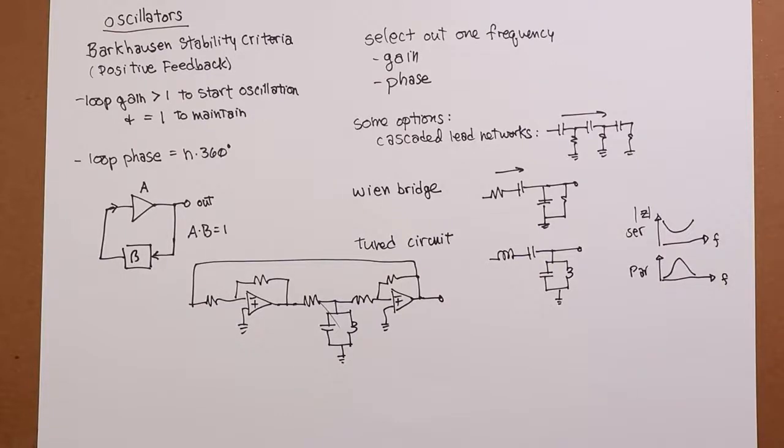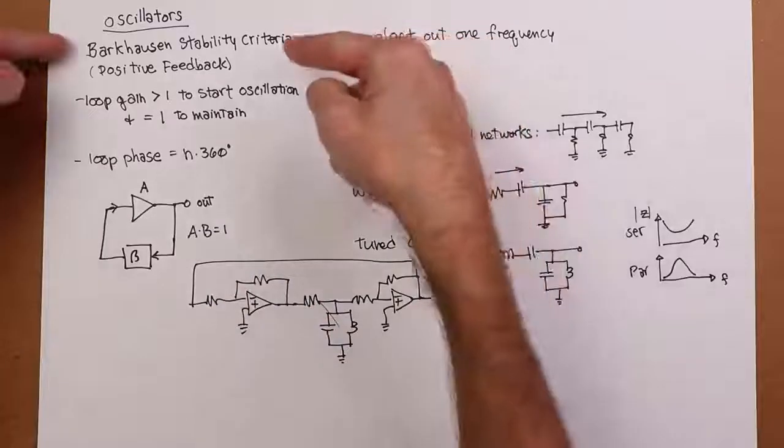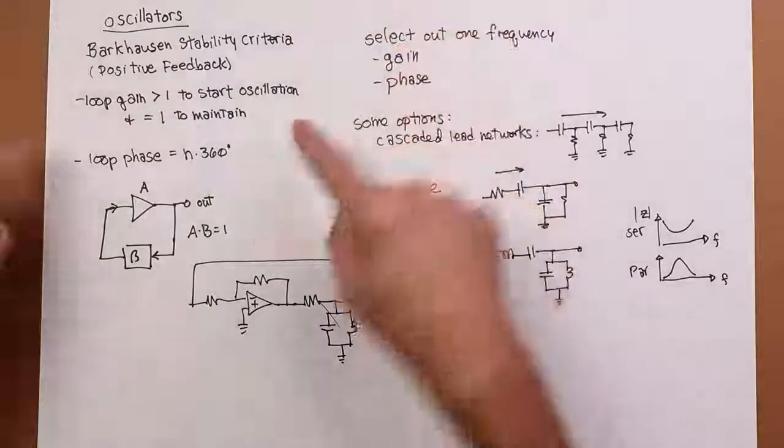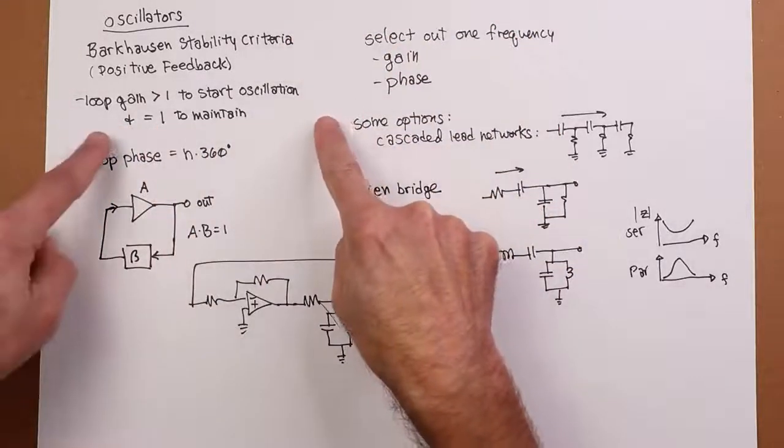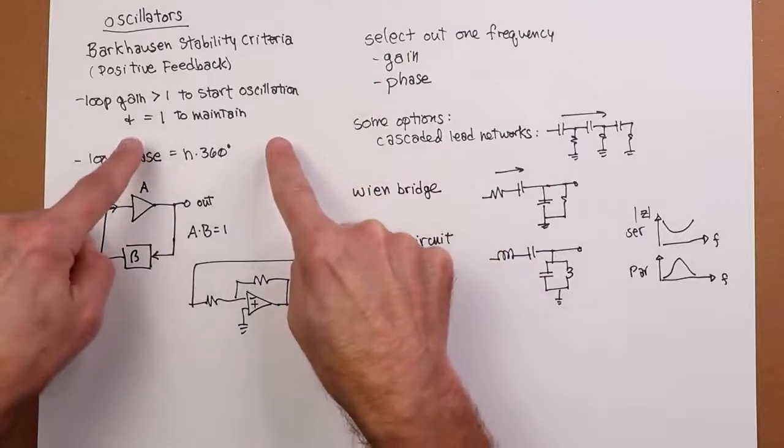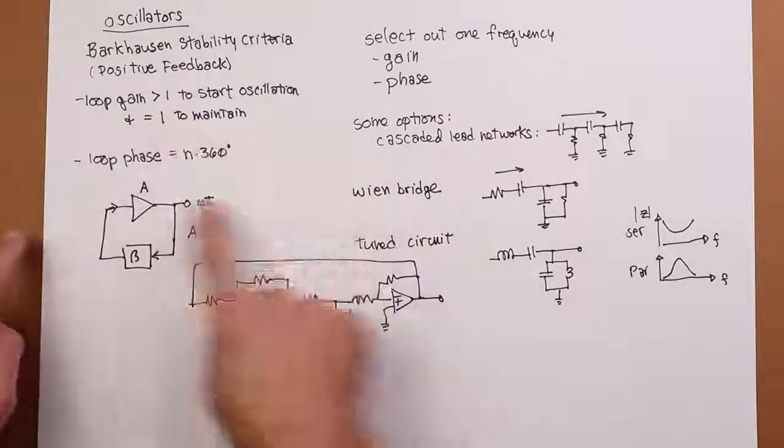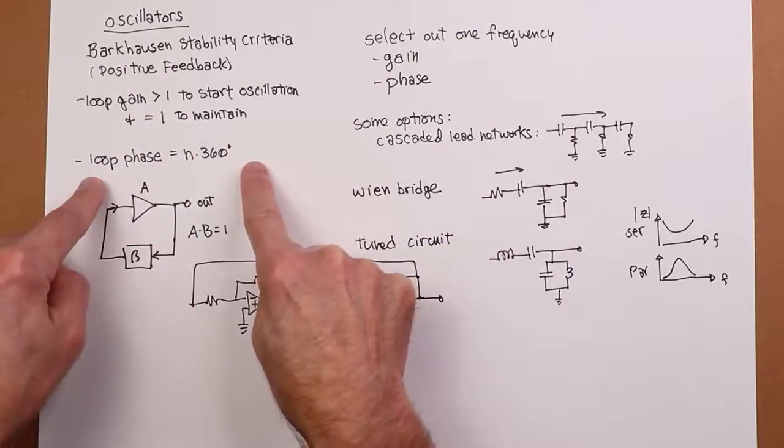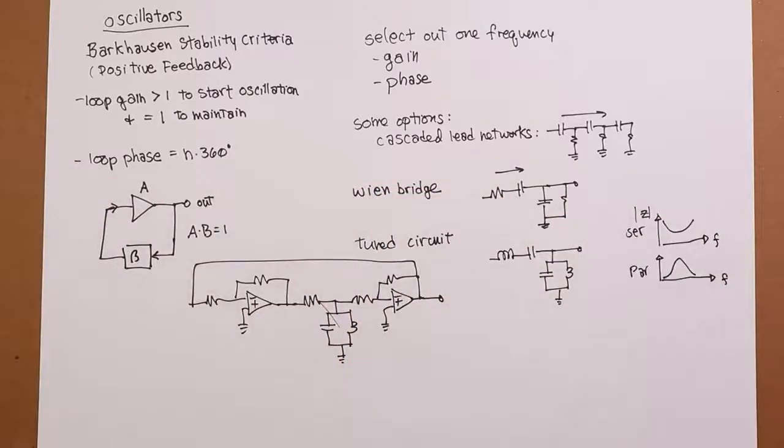So there are some other videos that we'll dive down into here and look, for example, at a Wien bridge, a triangle square wave generator, things like that. But this is a good start. So remember the Barkhausen criteria. Your loop gain has to be greater than 1 to start oscillation, equal to 1 to maintain it. And the loop phase must be an integer multiple of 360, including zero. There you go.